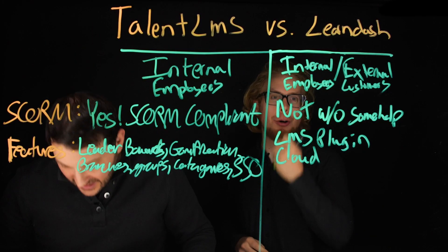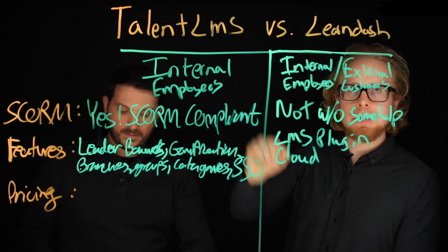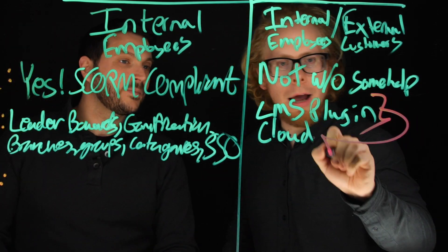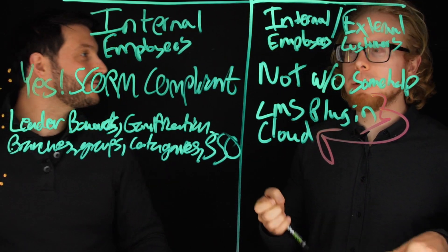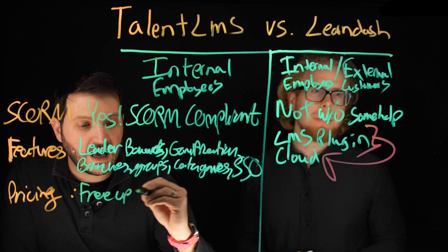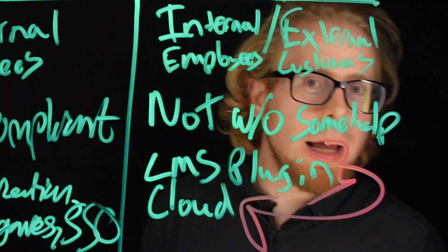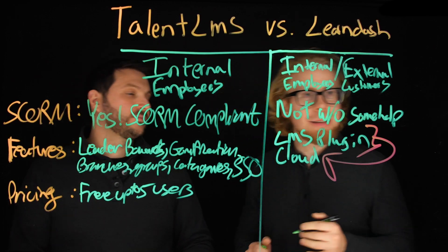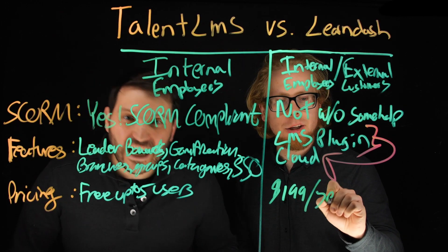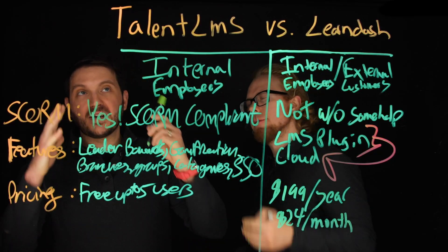Now let's go into pricing. TalentLMS is super customizable and a pretty robust system, while LearnDash is literally just an LMS plugin that eventually became a cloud version. Pricing for TalentLMS starts at free — free up to five users. LearnDash doesn't have a free version; the cloud version starts at $24 a month.